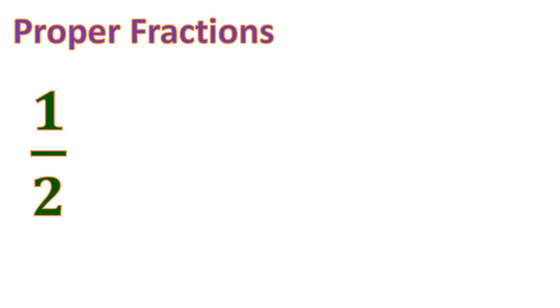Fractions like this — let's say one-half — where the numerator is smaller than the denominator, are what you call proper fractions. For example, four-fifths: four is smaller than five, where four is the numerator and five is the denominator.